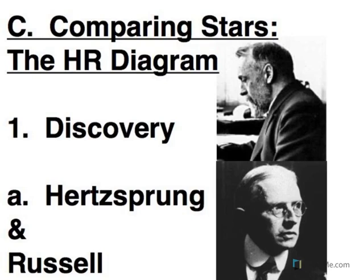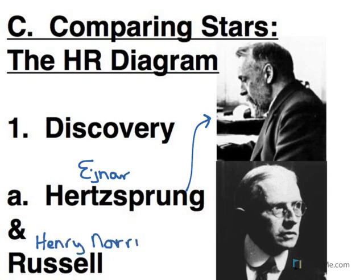The two people who discovered this idea of graphing these particular characteristics were these two guys: Ejnar Hertzsprung, this guy up here, and Henry Norris Russell, that guy.